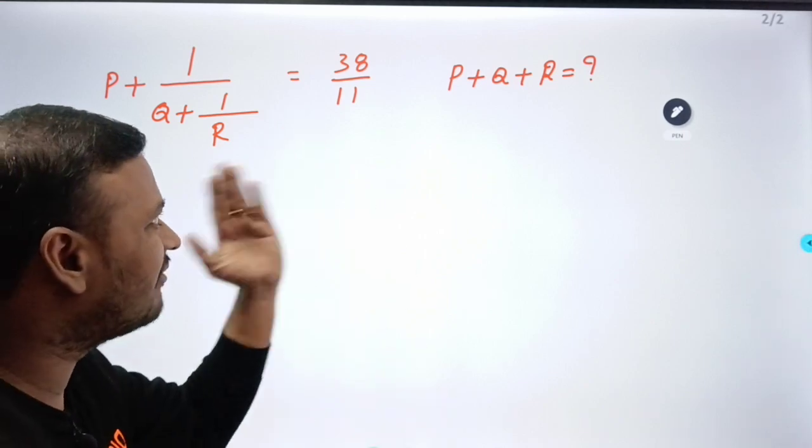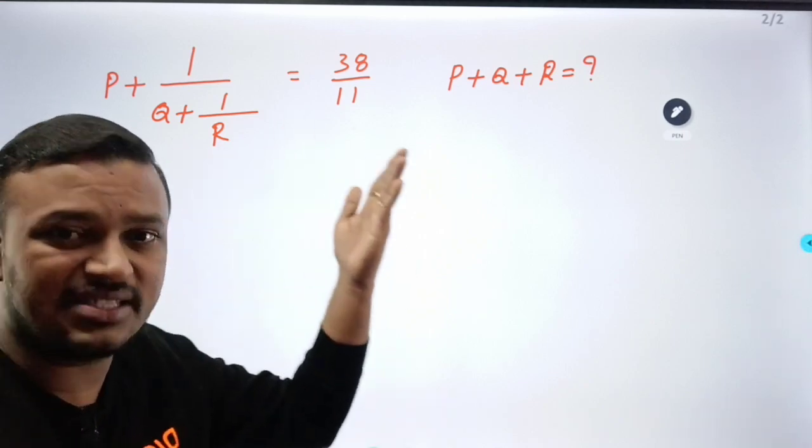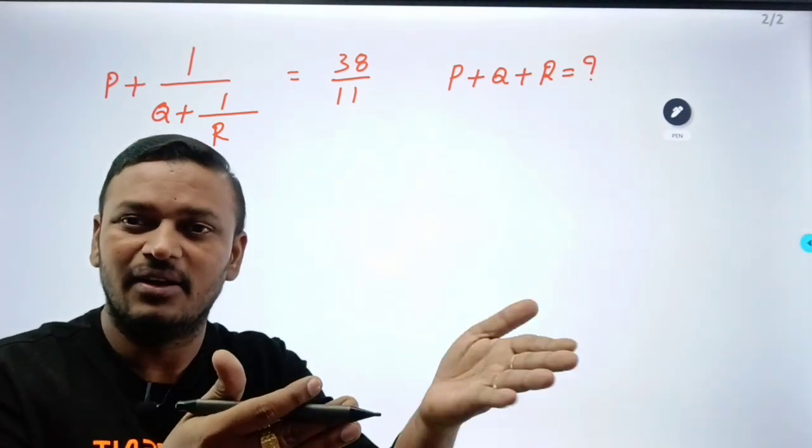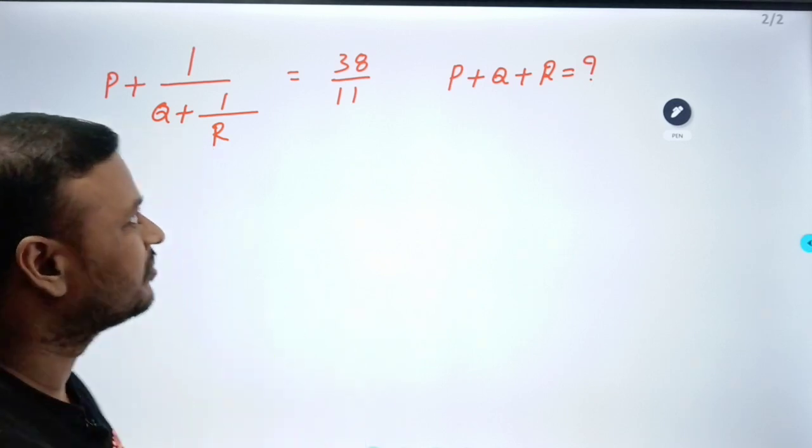38 by 11: 11 is divided — 3 times 11 is 33, remainder 5. So we get 5 by 11.